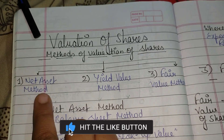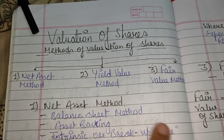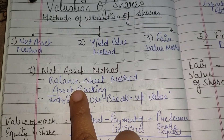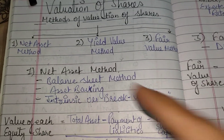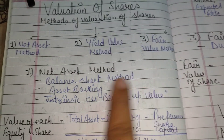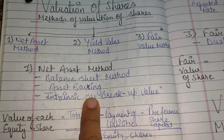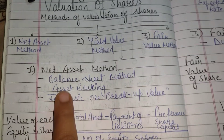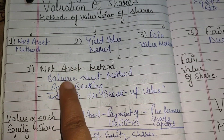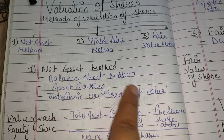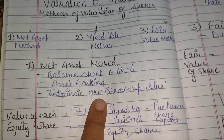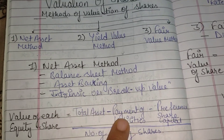The first is the Net Asset Method. The Net Asset Method is a very easy method as compared to the Yield Value Method or Fair Value Method, and many companies follow this method. It is also known as the Balance Sheet Method, Asset Backing Method, Intrinsic Value Method, and Break-up Value Method.